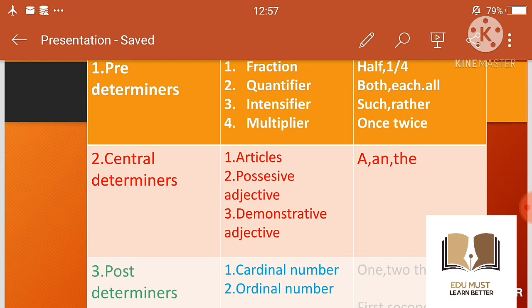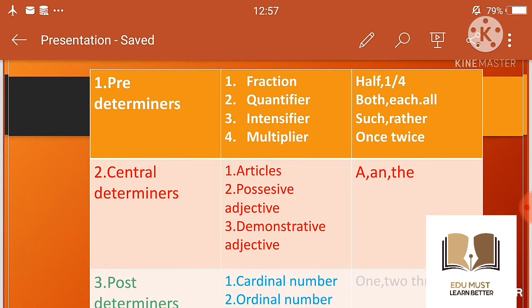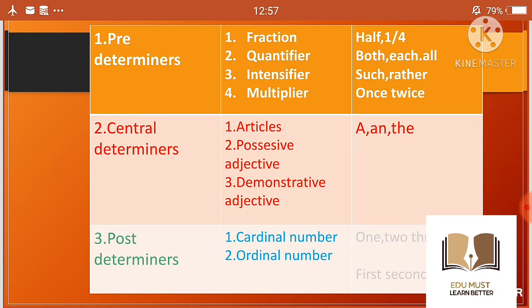Pre-determiners को हम four parts में divide कर सकते हैं। Central determiner को three types में divide करेंगे। Post-determiner की four types दी हैं, लेकिन mostly जो use होती हैं वो दो हैं। अभी हम इतना deep में नहीं जाएंगे क्योंकि इसके different parts हैं — fraction, quantifier, intensifier, और multiplier।